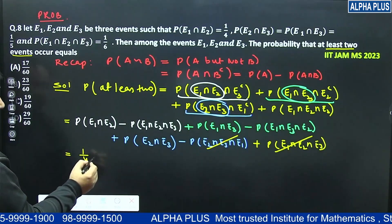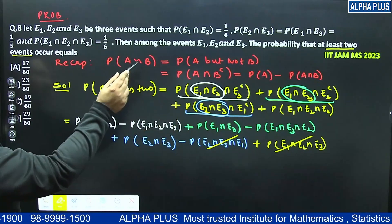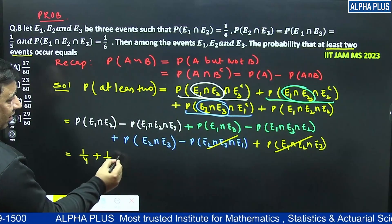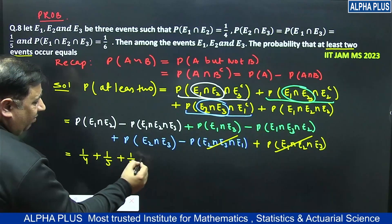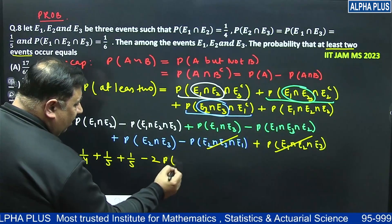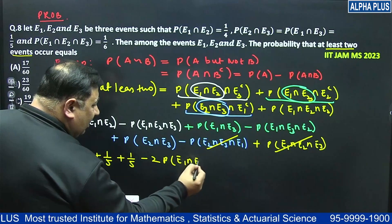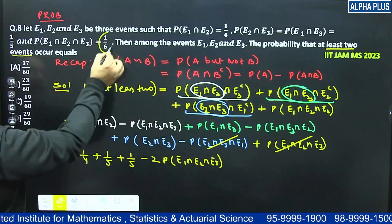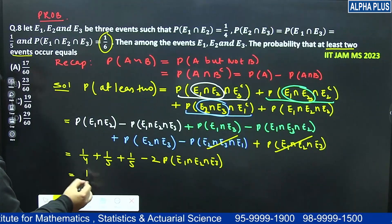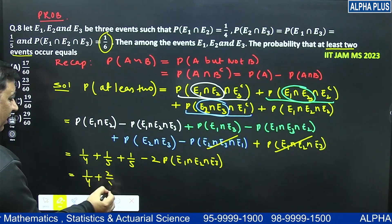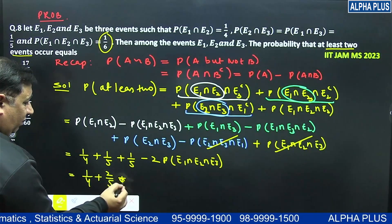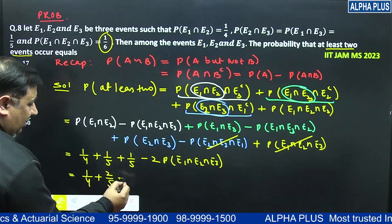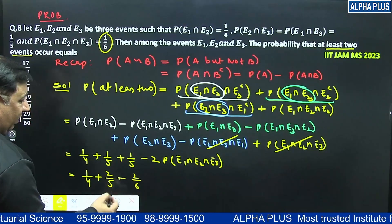And then the last term is e1 intersection e2 intersection e3, which is 1/6. So what we get is 2/5 minus 2/6, which equals 1/3.